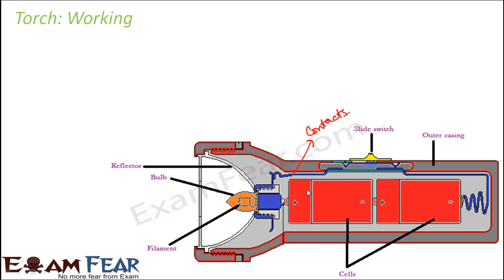Now let's see what happens when we switch on the torch and what happens when we switch it off. How do we switch on the torch? We just slide the switch. Let's say we have switched it on. When the torch is switched on, what happens is the battery is in touch with the bulb.